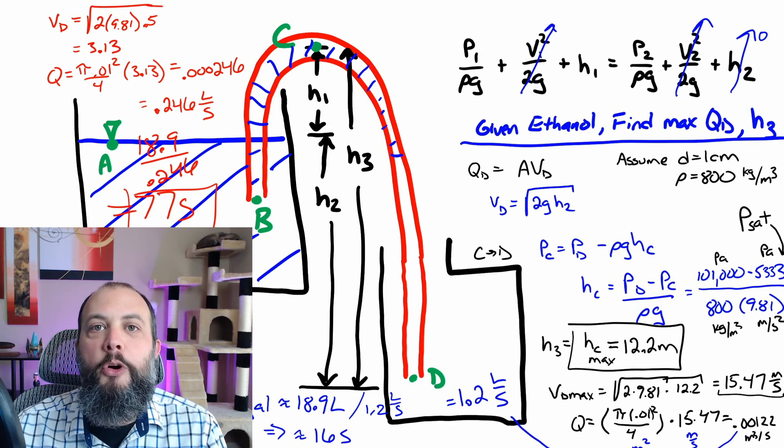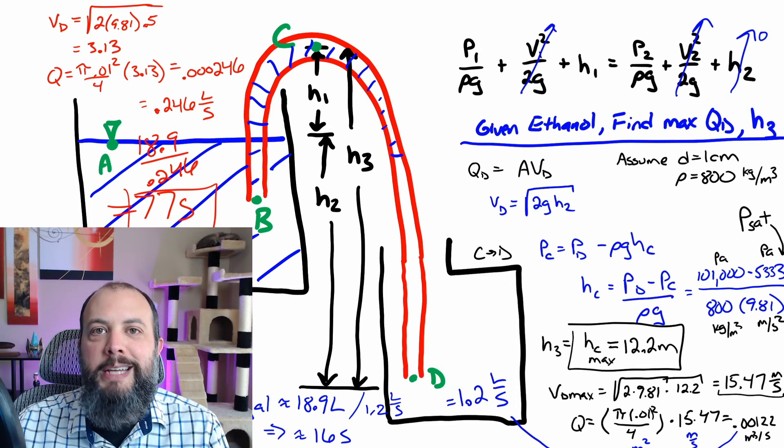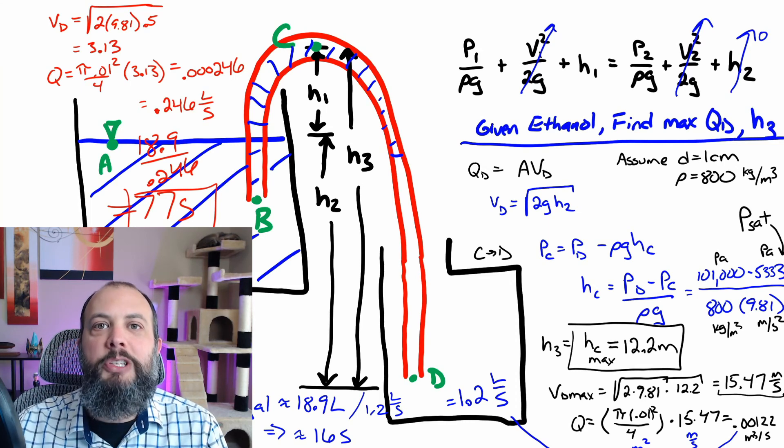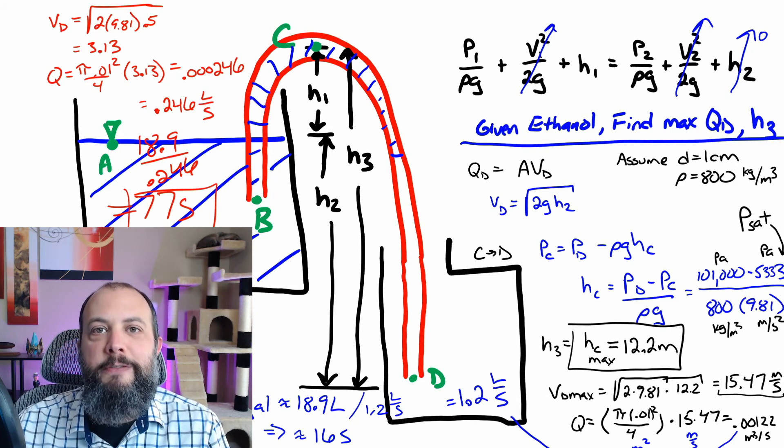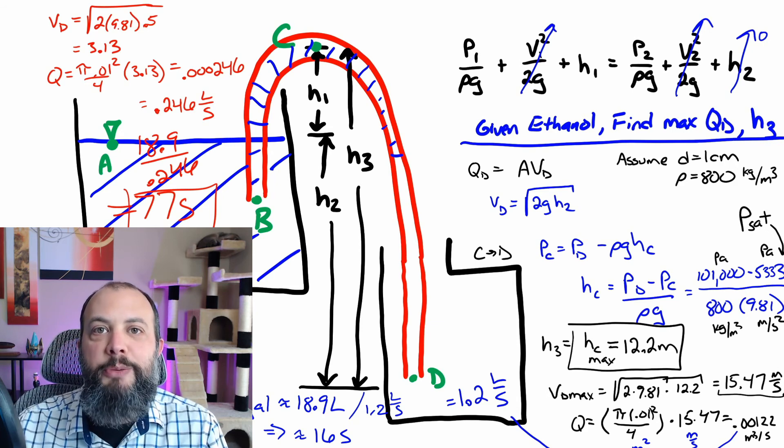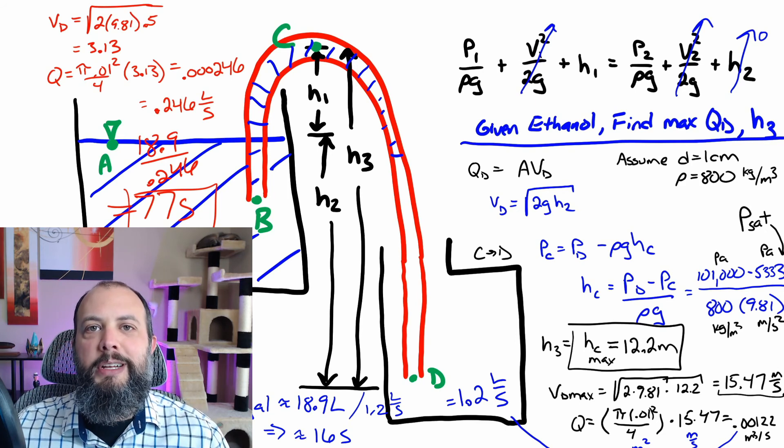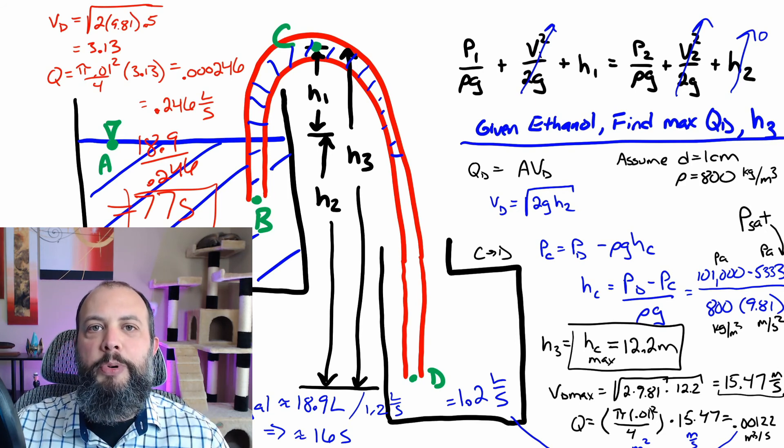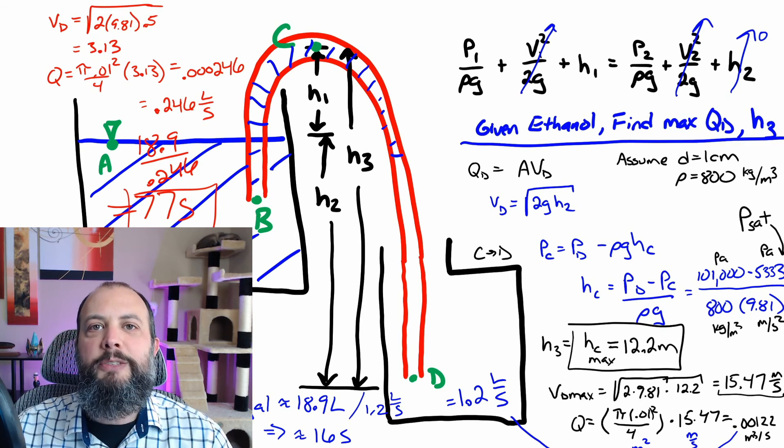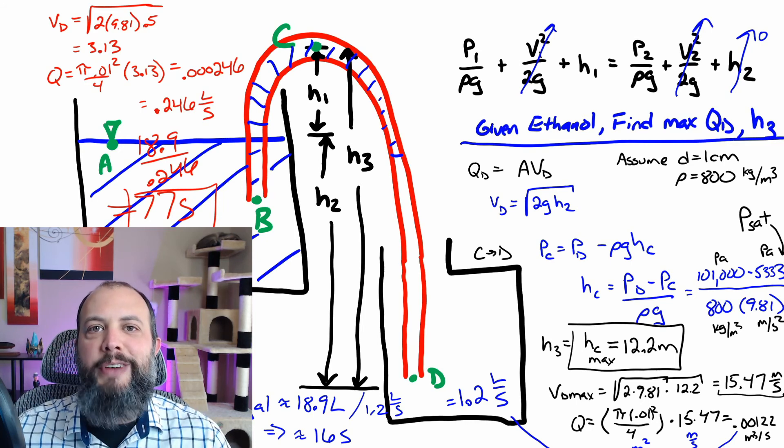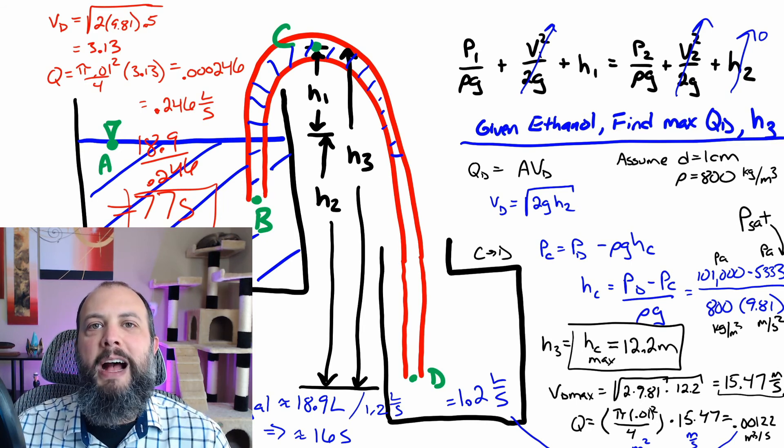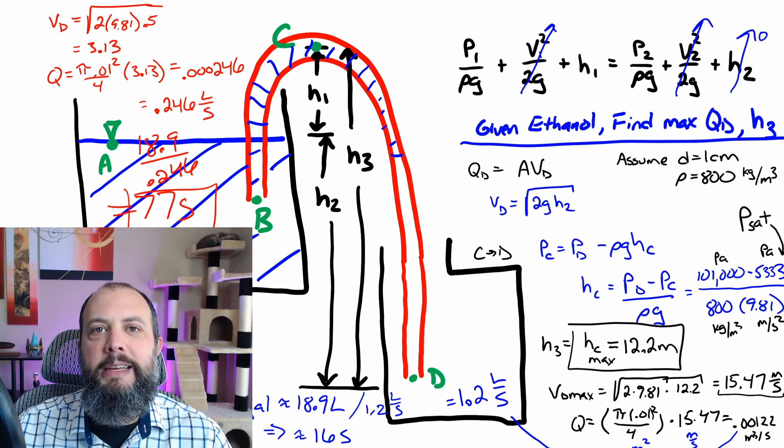So this is not a coincidence that five squared is 25, which is about the same ratio. Because of that square root sign in the velocity part of the equation, in order to double the throughput, you need four times as much height. So this is why 25 times shorter would lead to five times slower to fill the tank.